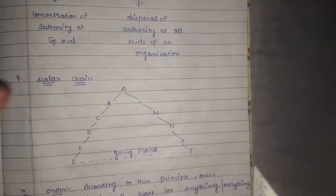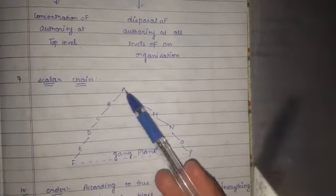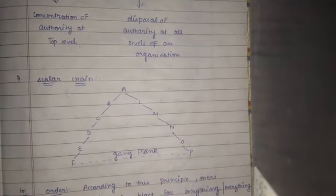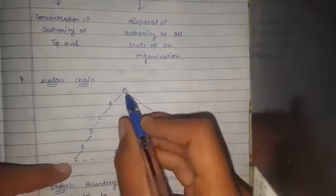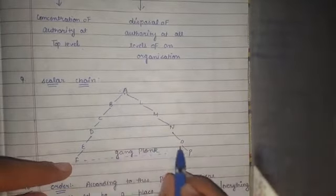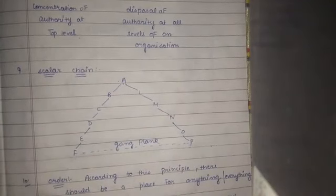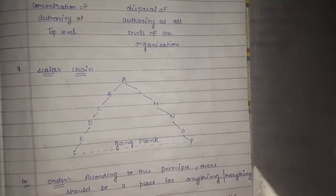The ninth principle is Scalar Chain, which is very important from an exam point of view. Scalar chain refers to the formal line of communication from the top level down through levels A, B, C, D, E, F — this is the hierarchy for formal communication. If a superior communicates to a subordinate, it flows down this chain. If a subordinate has a complaint or feedback, it goes back up through the scalar chain. An important concept here is Gangplank — when there is an emergency and information needs to be spread quickly, gangplank allows direct communication across departments, bypassing the formal chain.